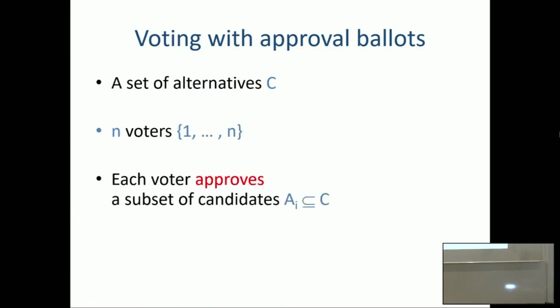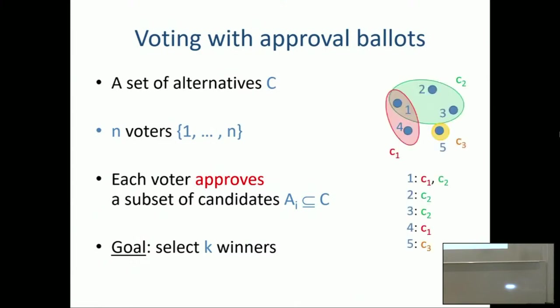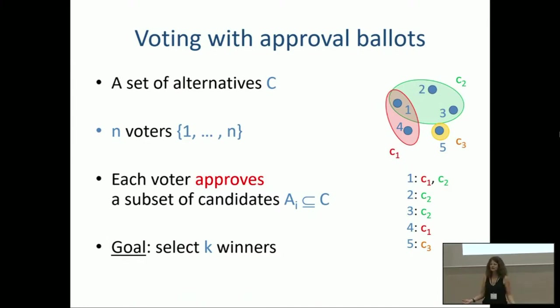The formal setup is very simple. We'll be talking about voting with approval ballots — voters approve or disapprove candidates. We have a finite set of candidates, a finite set of voters with approval ballots, and the goal is to select K winners. We'll illustrate this visually with voters as dots and candidates as circles or ellipses covering those dots. The intuition is that you want to select a set of candidates that nicely covers all the voters — a set-cover intuition.